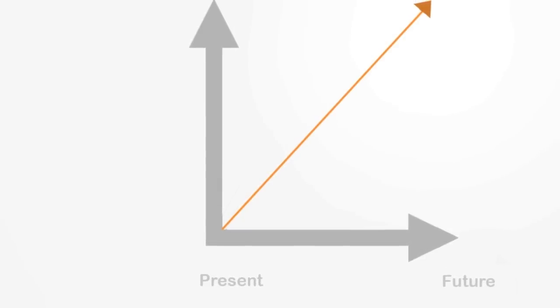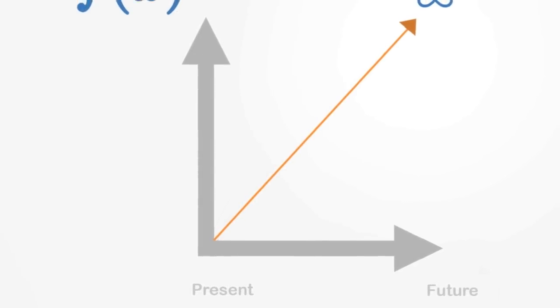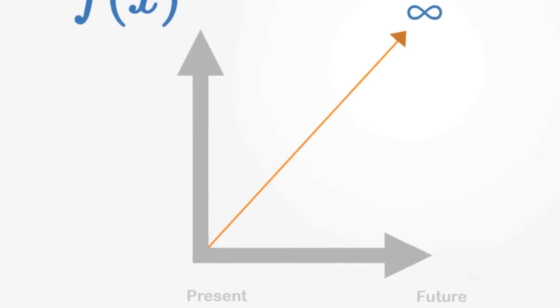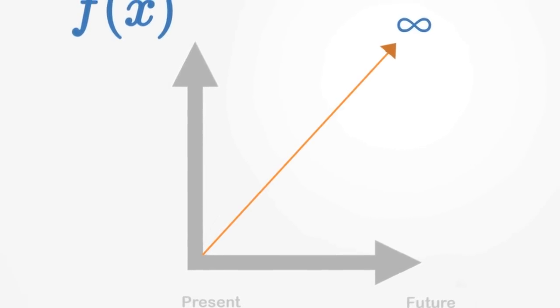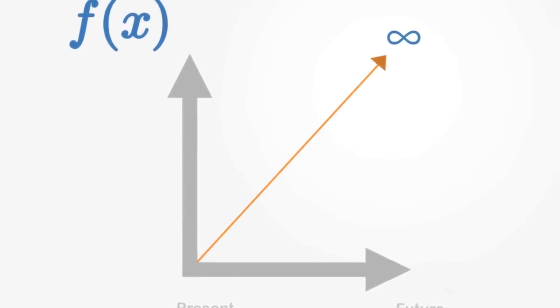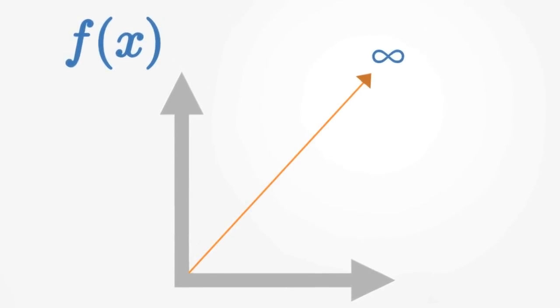Linear systems are deterministic, meaning that if we know their present state, we can fully determine their past and future states. This can be seen by plotting a linear system as a graph, where it will always be depicted as a straight line.